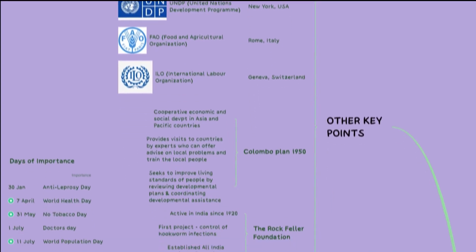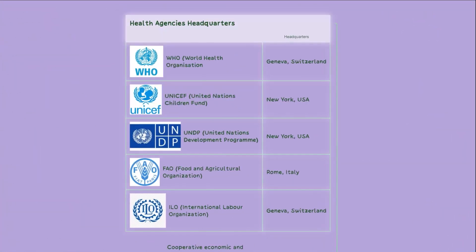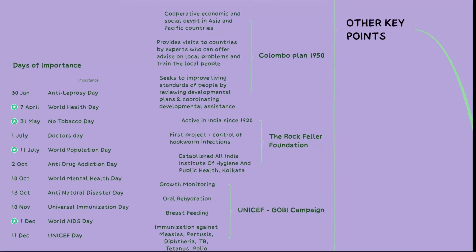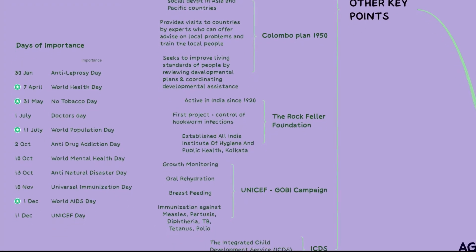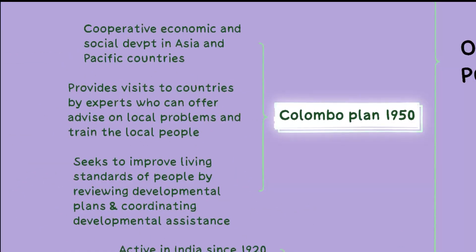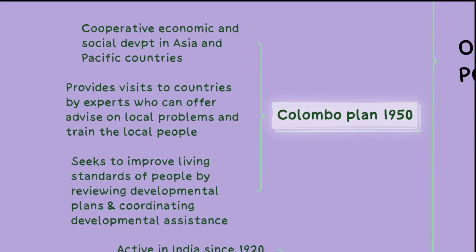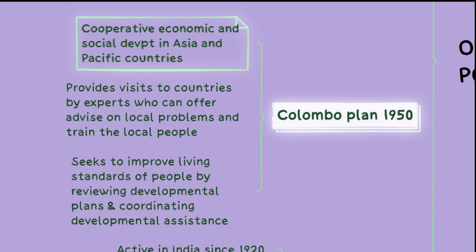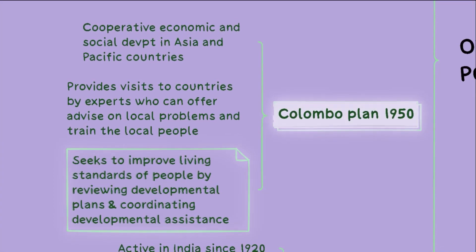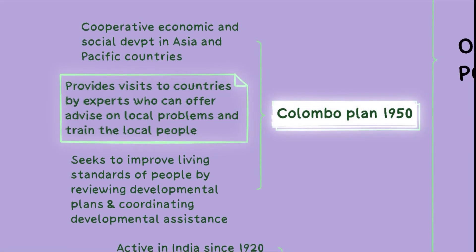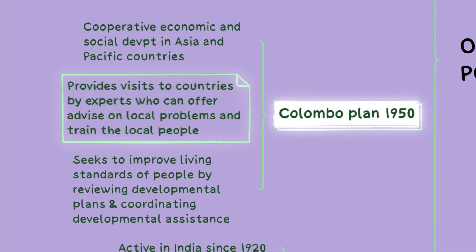There are many health agencies which oversee different aspects of the welfare of the population. Some health agencies and their respective headquarters are seen in our mind map here. The Colombo Plan, initiated in 1950, focuses on cooperative, economic, and social development in Asia and Pacific countries, providing assistance and expertise to improve living standards and coordinate developmental efforts. It provides visits to countries by experts who can offer advice on local problems and train local people.